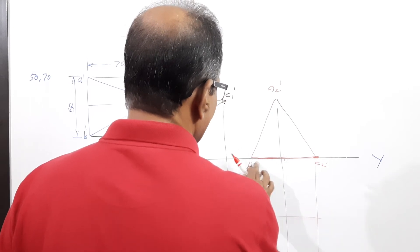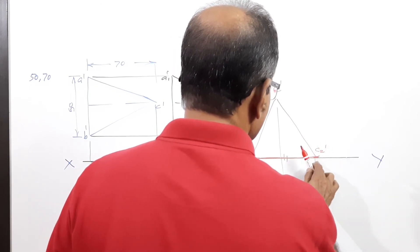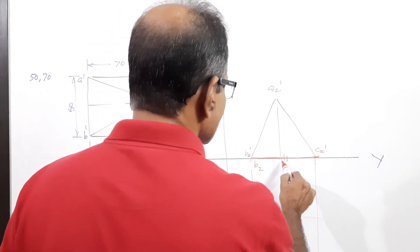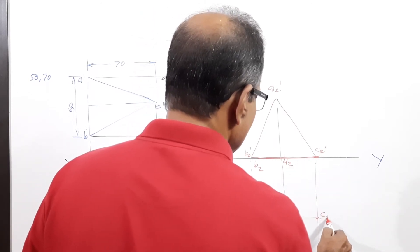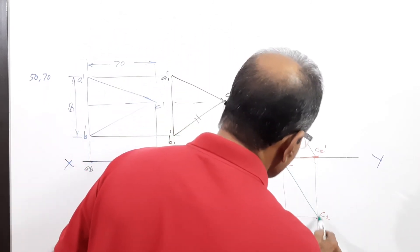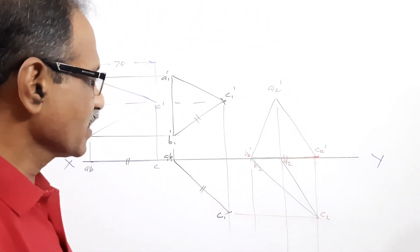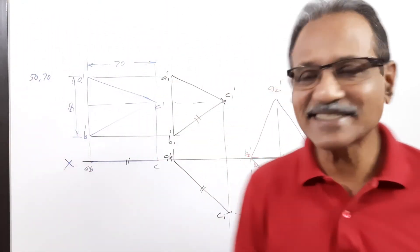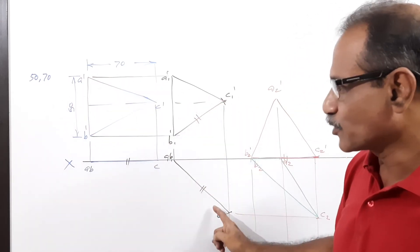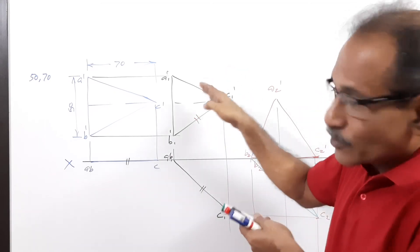Name the points: b1, c1, a1 in the first elevation, and b2-dash, c2-dash, a2-dash in the redrawn elevation. The final plan is a2, b2, c2. This is the solution: simple position, keep lamina on VP, pull it so the elevation becomes an equilateral triangle, then redraw the plan from the redrawn elevation.